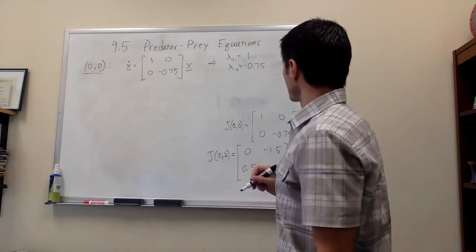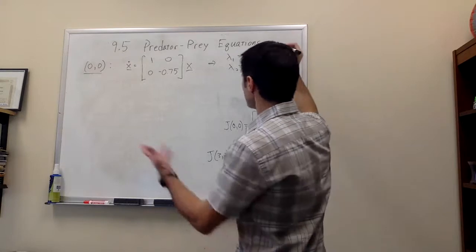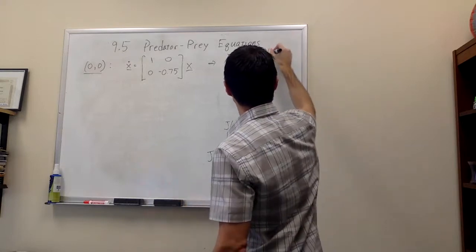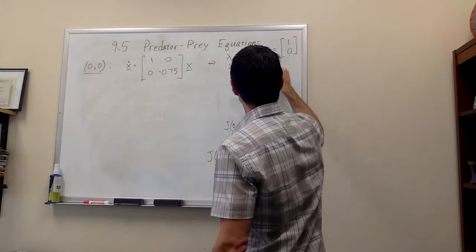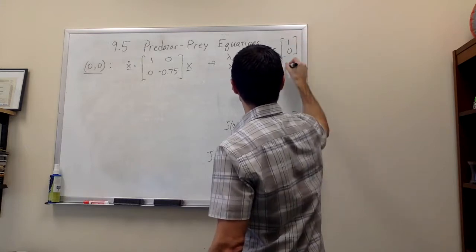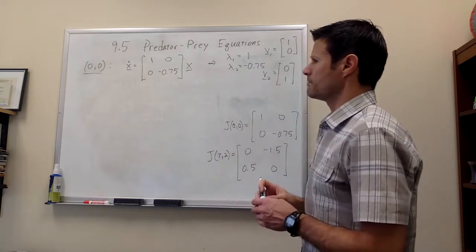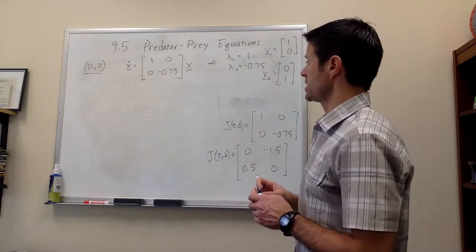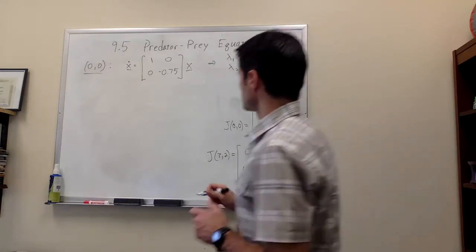And we can even write down corresponding eigenvectors. V1 is equal to the vector 1, 0. And V2 is equal to the vector 0, 1. So if we were to actually zoom in on the phase portrait for this system, you would see the following.